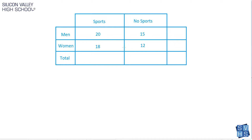The first thing you have to do when looking at these two-way tables is find the total values — that's the start. Forget sports, no sports — just looking at sports alone, how many men and women total play sports? You would just add these, so that's 38. And then similarly, adding down here: 15 and 12 is 27, so all the men and women collectively that don't play sports comes to 27.